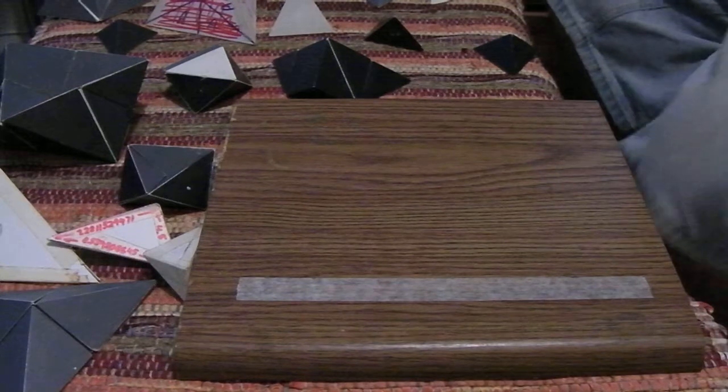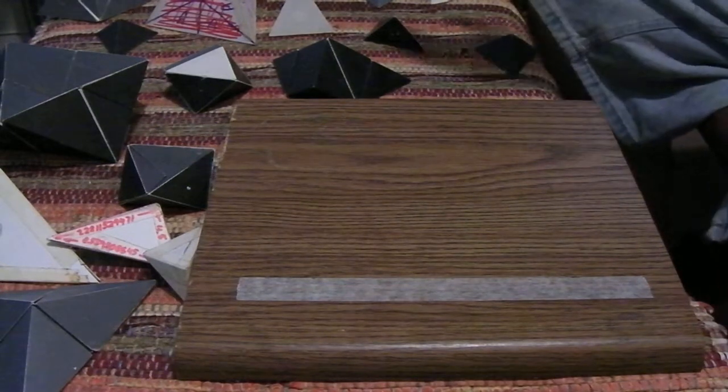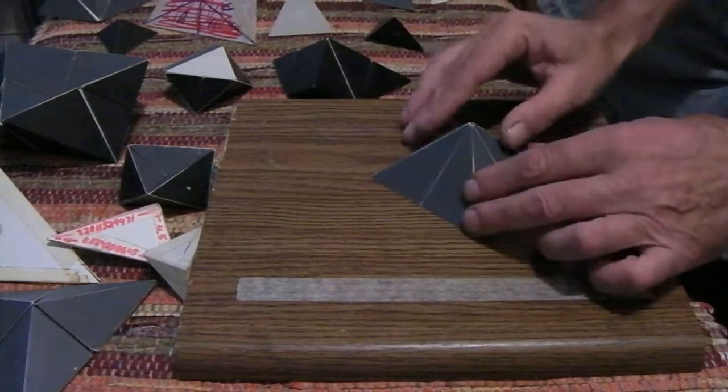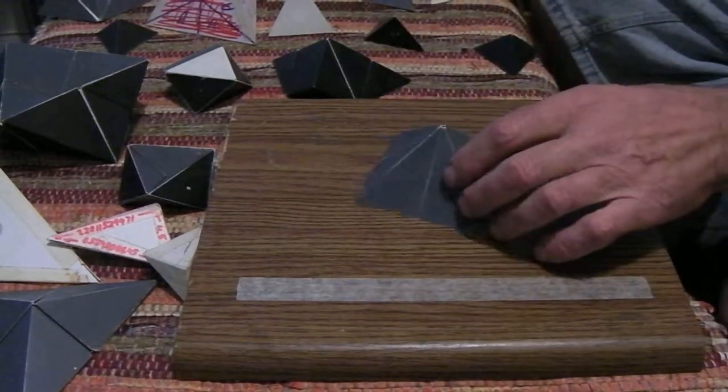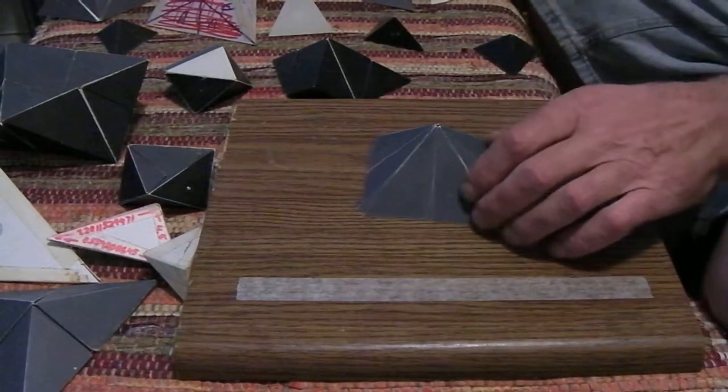We have this module, which is a half coupler. This is a half coupler, or half oblate octahedron from the isotropic vector matrix chart.